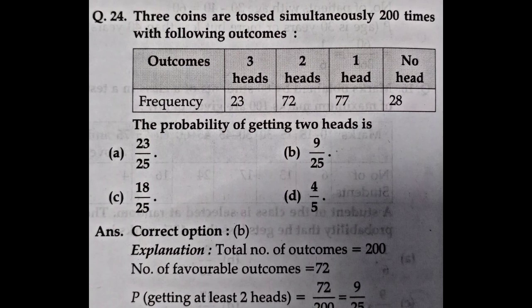Moving to question number 24. Three coins are tossed simultaneously 200 times. Frequencies: 3 heads = 23 times, 2 heads = 72 times, 1 head = 77 times, 0 heads = 28 times. Find the probability of getting 2 heads. Favorable events = 72, total attempts = 200. Probability = 72/200 = 9/25. Option B is correct.